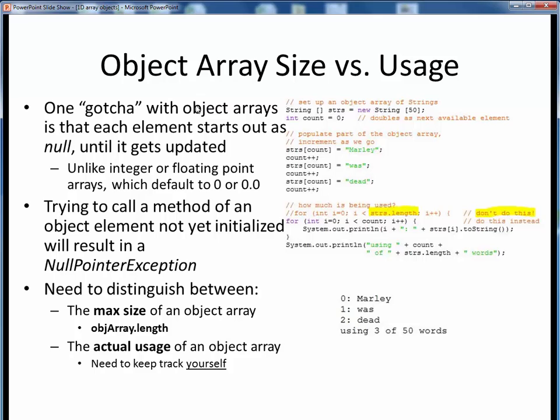The key gotcha we must keep in mind when working with arrays of objects is that all the elements have null object reference values by default until they are otherwise initialized. This is a key difference from numeric arrays, which have 0 or 0.0 values as their defaults. What this means is that if we try to manipulate any object array element which hasn't yet been initialized, we're going to get some kind of exception error.